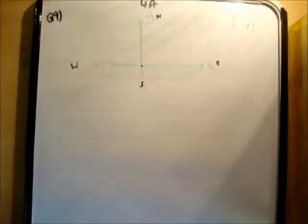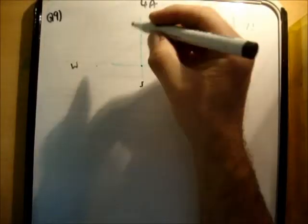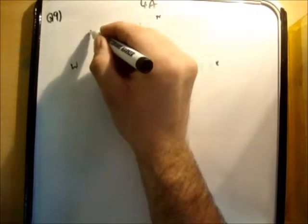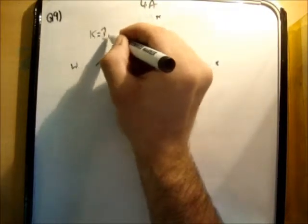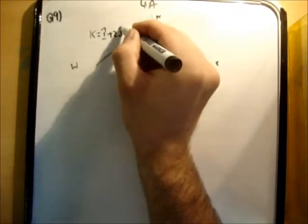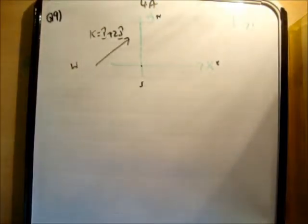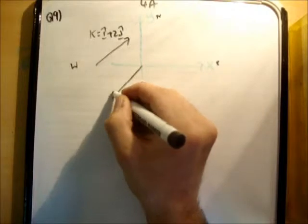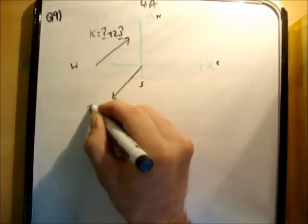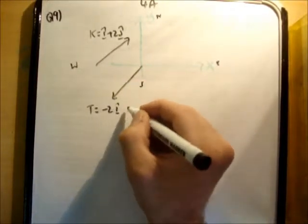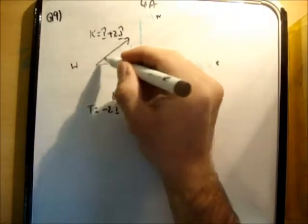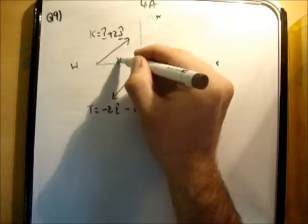So k is i-hat plus 2j-hat. It's going in this direction, in the plus quadrant. So k equals i-hat plus 2j-hat. And then t is negative 2i-hat, negative 2j-hat, so it's this quadrant. Now we know from here to here is 20 metres.